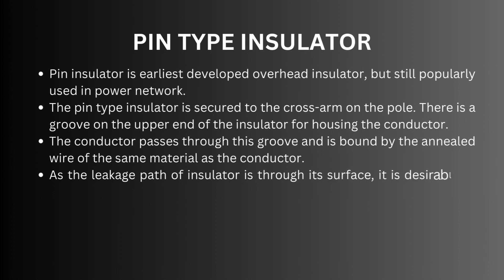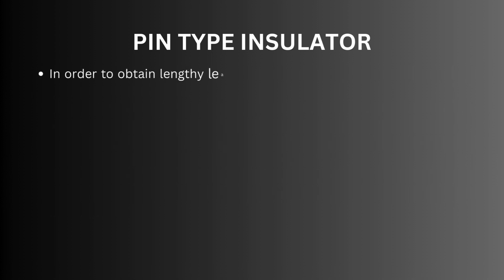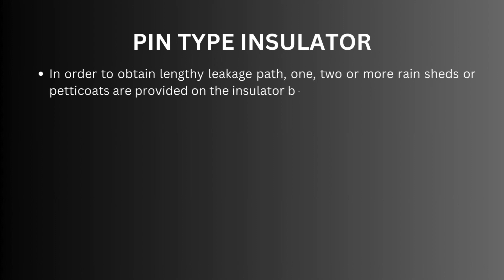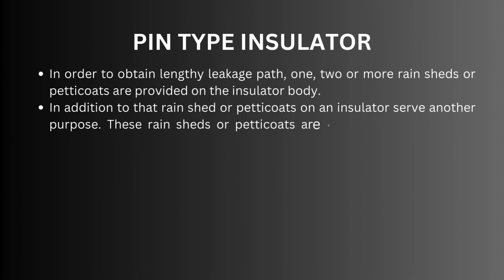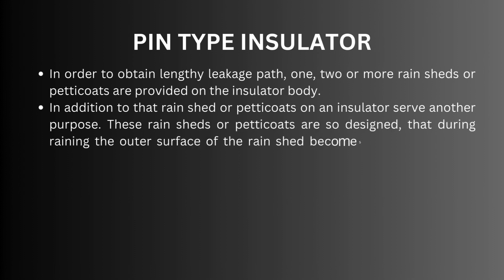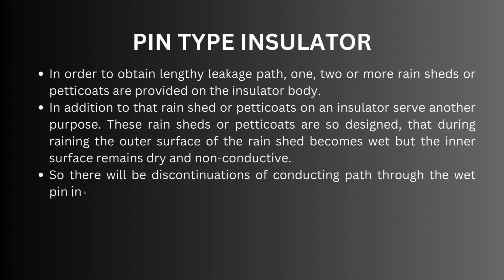As the leakage path of the insulator is through its surface, it is desirable to increase the vertical length of the insulator surface area for lengthening the leakage path. In order to obtain a lengthy leakage path, two or more rain sheds or petticoats are provided on the insulator body. These rain sheds or petticoats are so designed that during rain the outer surface becomes wet but the inner surface remains dry and non-conductive, creating discontinuations of the conducting path through the wet pin insulator surface.